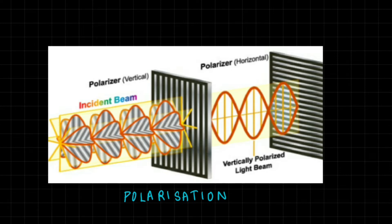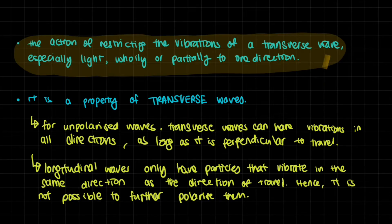This is a simplified kind of imagination of what light actually behaves like. You can see that it's been polarized in the sense that it only goes up and down. Doing this is basically what polarization means. The definition of polarization is it is the action of restricting the vibrations of a transverse wave, especially light, wholly or partially to one direction.